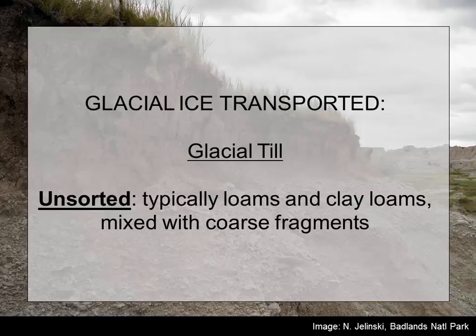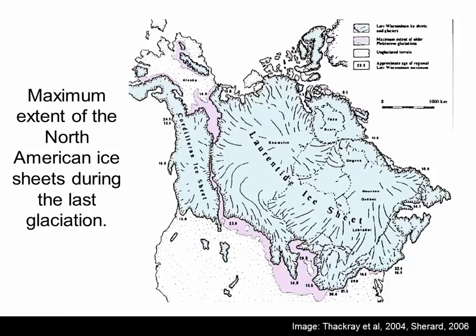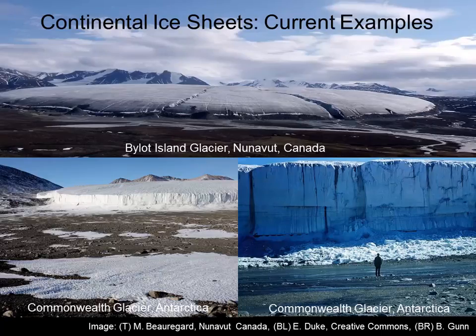Probably the most important transportation mechanism in Minnesota is glacial ice, and glacial till in particular. Glacial till is a material we conceptualize as unsorted, brought in by glacial ice — not sorted by wind or water after melting. We usually see coarse fragments in glacial till along with a mix of sand, silt, and clay, giving us loamy textures. Here's an example of the maximum extent of the North American ice sheets during the last glaciation — there were two centers. The lobes that came into Minnesota were part of the Laurentide ice sheet that came out of the Hudson Bay center.